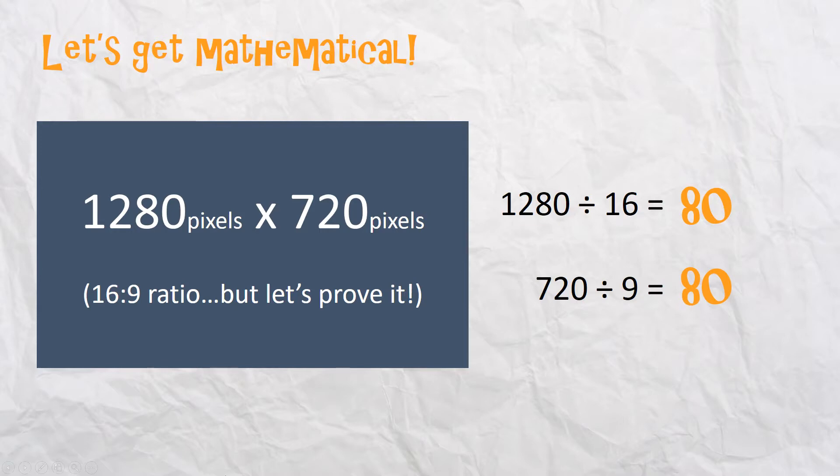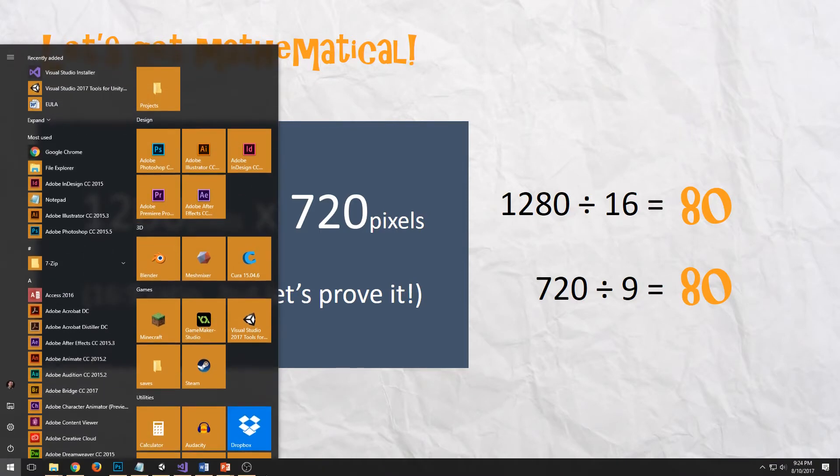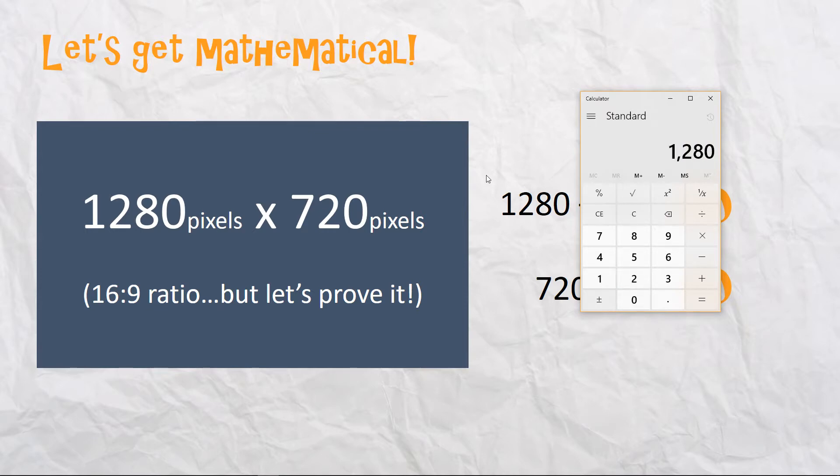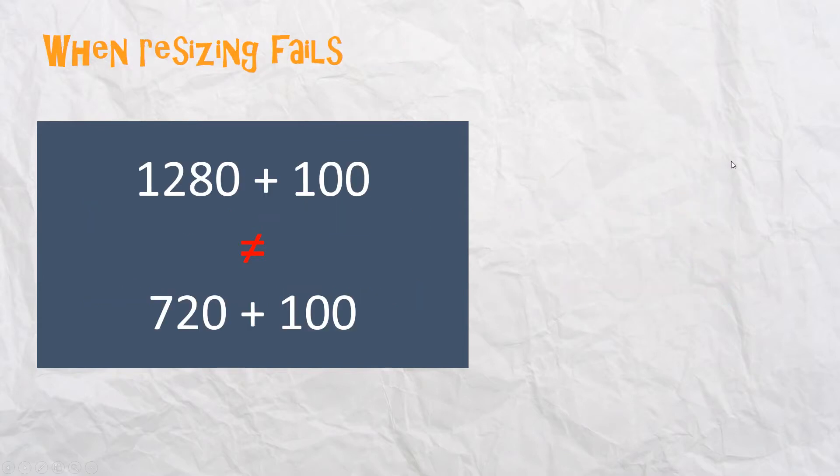I'm going to grab my calculator, because I know you don't believe me. 1280 divided by 16 equals 80. 720 divided by 9 equals 80. There you go. You can do that yourself, too. So that's the comparison.